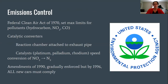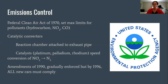For emissions control, the federal Clean Air Act of 1970 set maximum limits for certain pollutants like hydrocarbons, nitrogen dioxide, and carbon monoxide. We've also installed catalytic converters on vehicles — a reaction chamber attached to the exhaust pipe that uses a catalyst like platinum, palladium, or rhodium to feed the conversion of nitrogen dioxide to nitrogen gas, which is perfectly safe to have in the atmosphere and is one of the biggest components. The 1990 amendments were gradually enforced, and by 1996 all new cars had to comply.